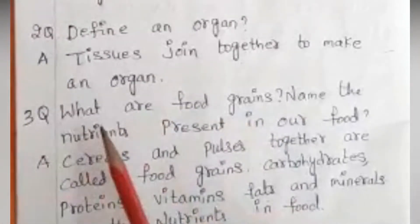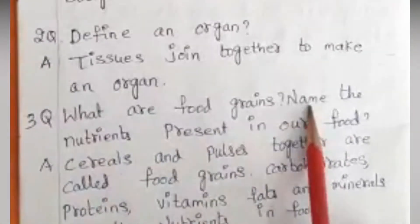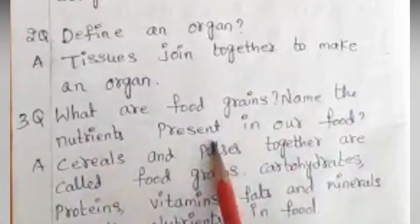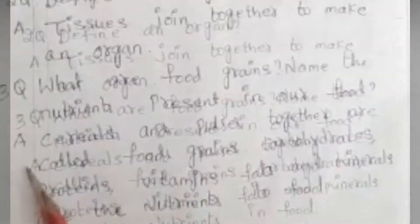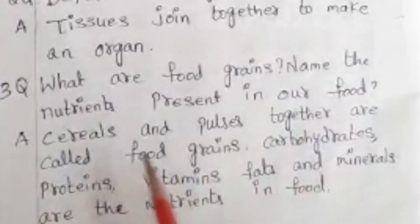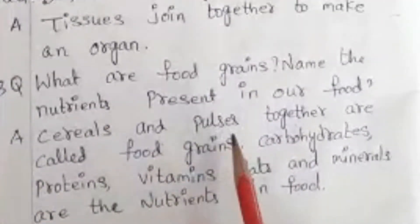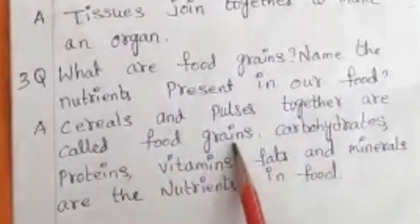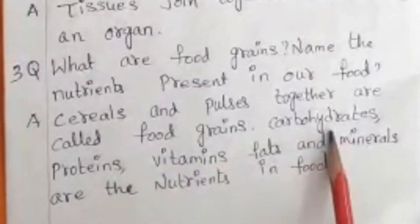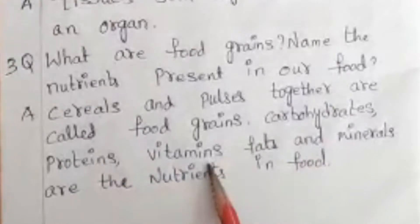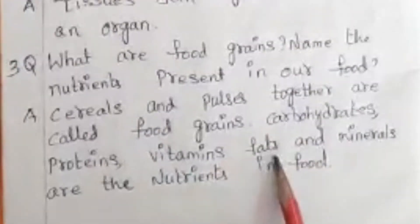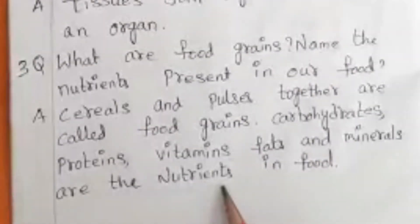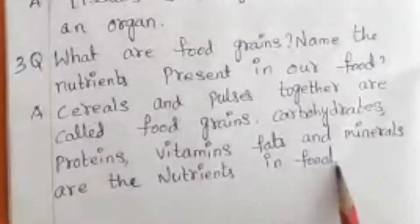Third question: What are food grains? Name the nutrients present in our food. Answer: Cereals and pulses together are called food grains. Carbohydrates, proteins, vitamins, fats, and minerals are the nutrients in food.